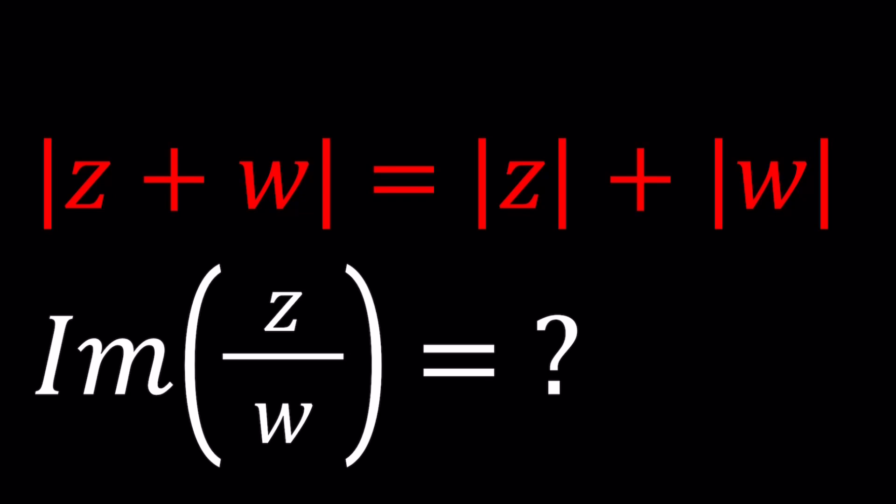We have two complex numbers Z and W such that the absolute value of Z plus W equals the absolute value of Z plus the absolute value of W. Wait a minute, isn't this always true? And the answer is no. This is not an identity, it's only true in certain situations.